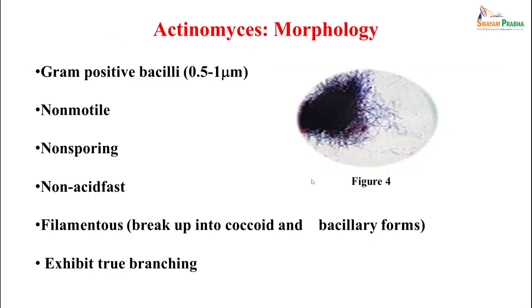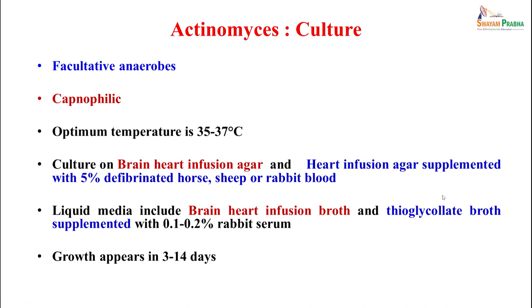Actinomyces morphologically they are gram-positive bacilli, 0.5 to 1 micron in size, non-motile, non-sporing, non-acid-fast. They are filamentous and break up into coccoid and bacillary forms, and they exhibit true branching, which is why they were earlier confused to be fungi. When growing them, they are facultative anaerobes but capnophilic — they require carbon dioxide — with optimum temperature of 35 to 37 degrees centigrade. They can be grown on brain heart infusion agar and heart infusion agar supplemented with 5 percent defibrinated horse, sheep, or rabbit blood.